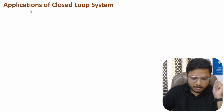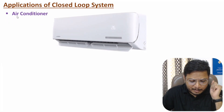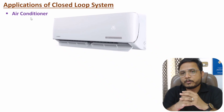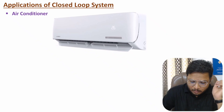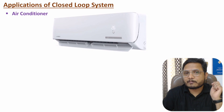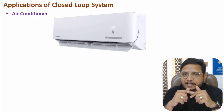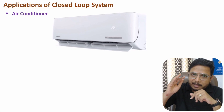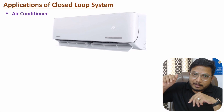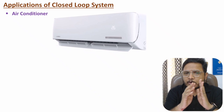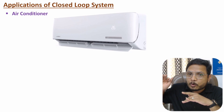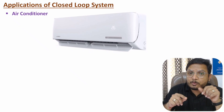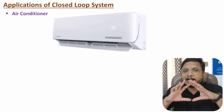Now I'll discuss about applications of closed loop control system. One popular application is the air conditioner. In your room, if you turn on the AC and set the temperature to 26 degrees Celsius, the AC turns on and throws cool air inside your room. Assuming the current room temperature is 28 degrees Celsius, the AC will try to cool the room. Once the room temperature reaches 26 degrees Celsius, the AC turns off automatically.